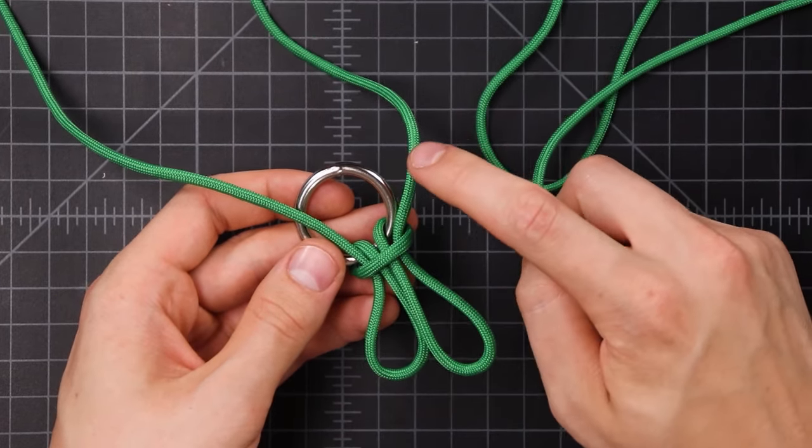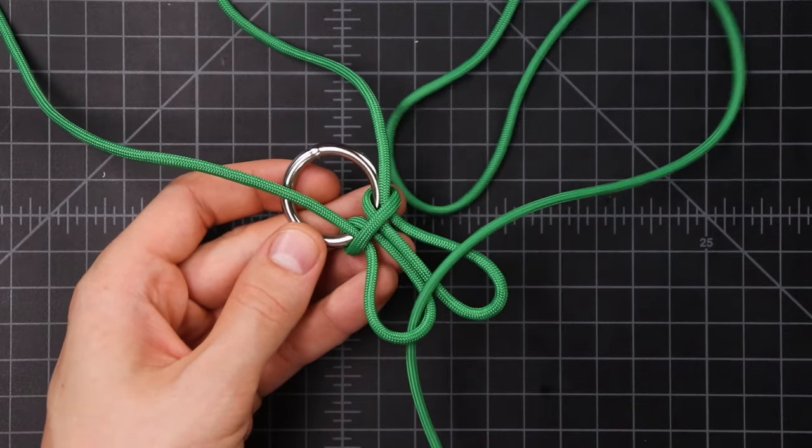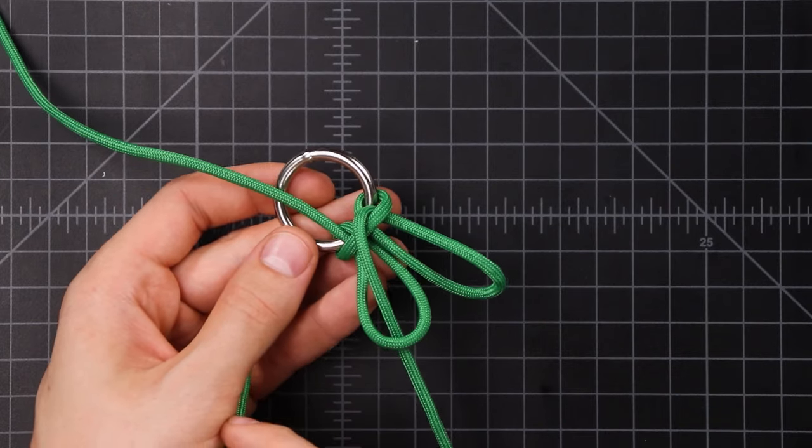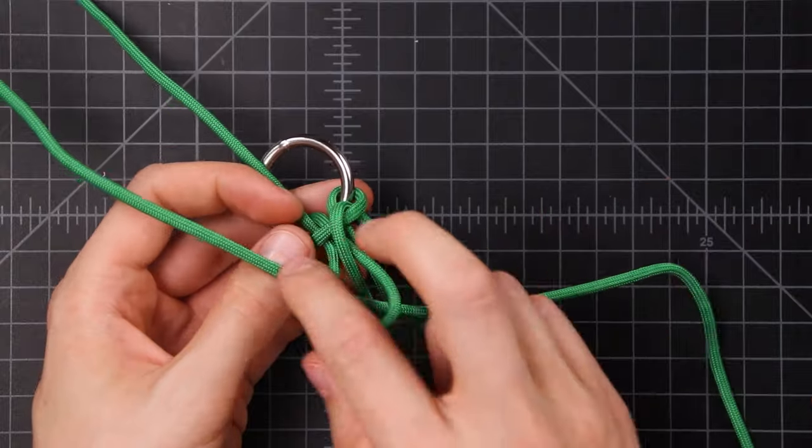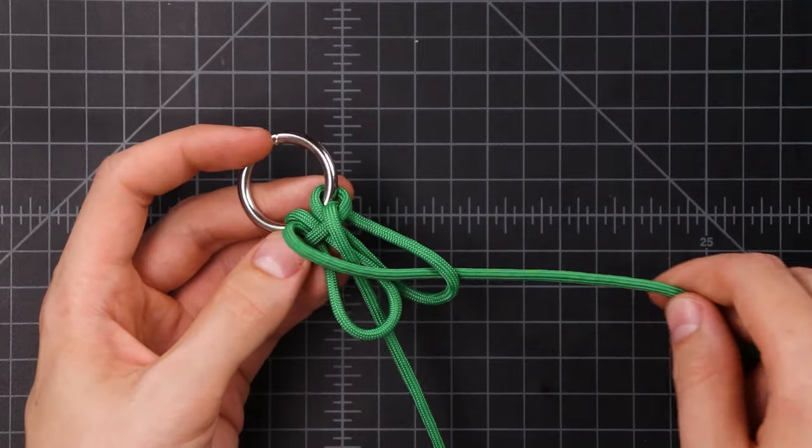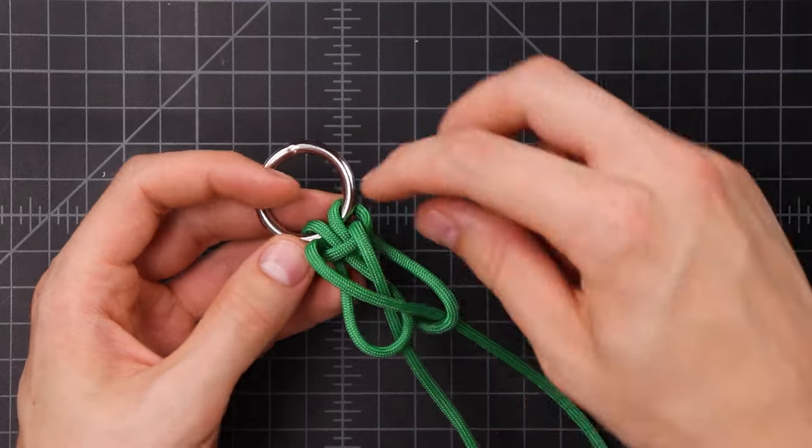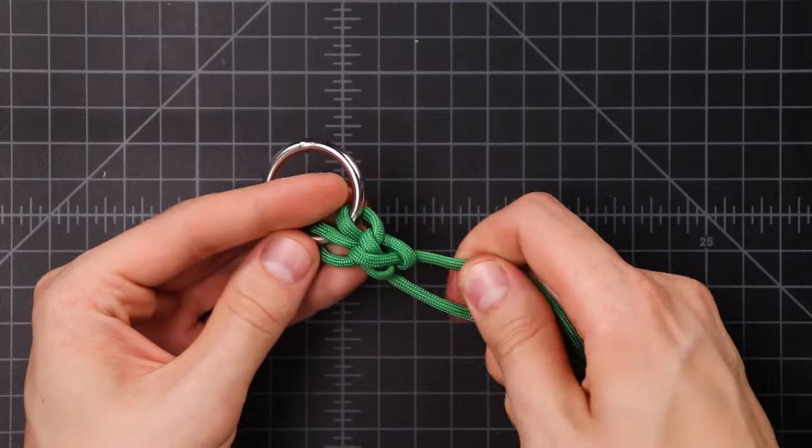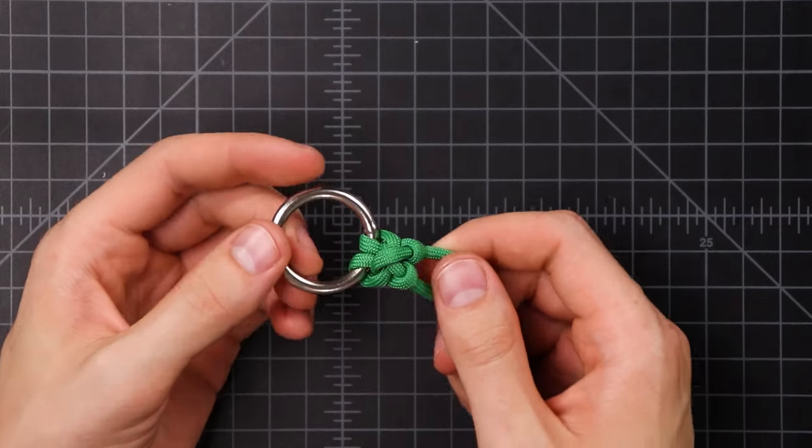And then take your right side end and put it through that left loop. And criss-cross the left side cord and put it through the right loop. And then carefully tighten that down without capsizing the knot. So bring your ears smaller, and then feed your cord through. When you're finished tightening it down, it should look like this.